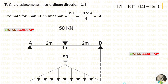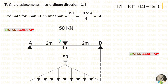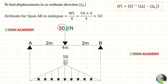We have to find the slope at the coordinate. For that, we make a conjugate beam using the load. In the simply supported beam, with a point load acting at the center, the formula to calculate the ordinate is WL/4. Here W is 50 and L is 4, so when we apply the values, we get 50. In the conjugate beam, we divide the moment by EI.